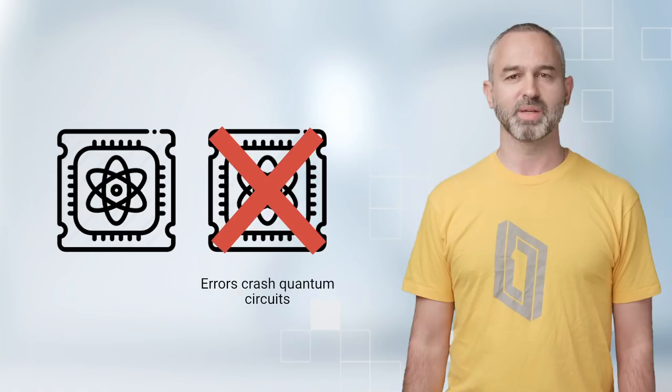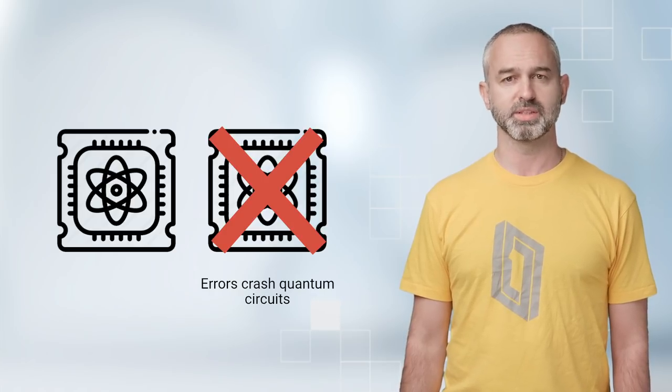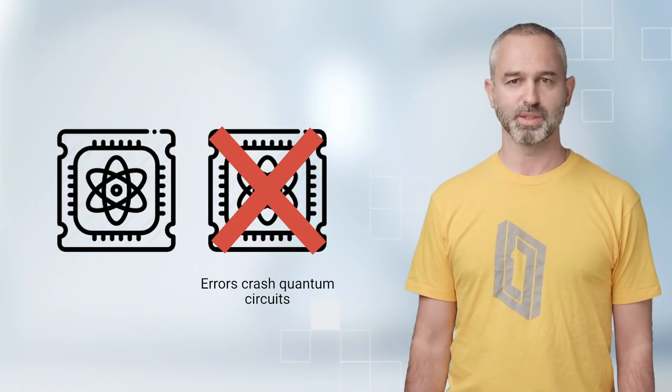By their nature, quantum gates have a probability of errors, and errors can cross quantum circuits. As we calibrate quantum circuits, we bring down the probability of error.